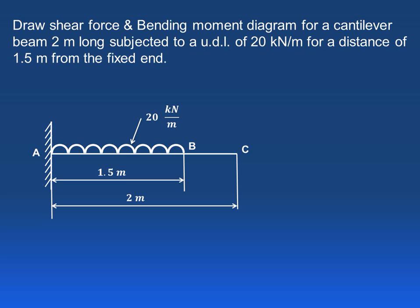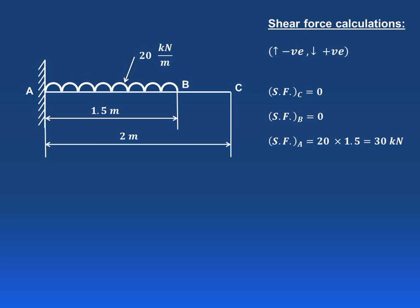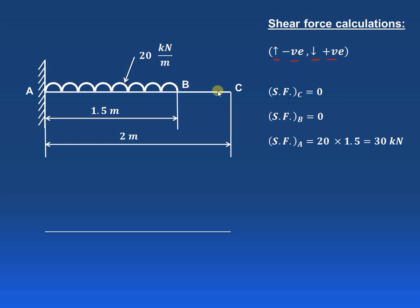Now let us start with the shear force diagram calculations. The convention used is: upward forces are considered negative, whereas downward forces are considered positive. First we draw the baseline. At point C there is no force acting, therefore shear force at C is zero. Similarly, shear force at B is also zero because there is no force acting on the right-hand side of B.